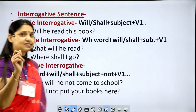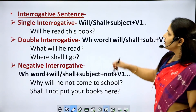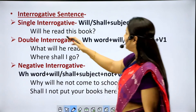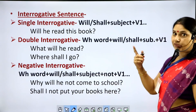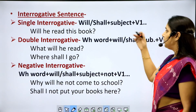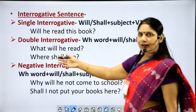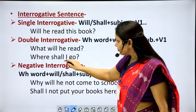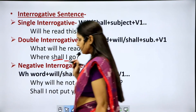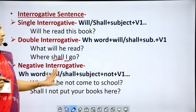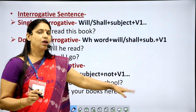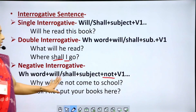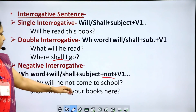For interrogative sentences in simple future tense. Single interrogative: will/shall plus subject plus V1. Example: 'Will he read this book?' Double interrogative: WH word plus will/shall plus subject plus V1. Examples: 'What will he read?' 'Where shall I go?' — subject is 'I' so 'shall' is used. For negative interrogative: WH word plus will/shall plus subject plus not plus V1. Examples: 'Why will he not come to school?' 'Shall I not put your books here?'